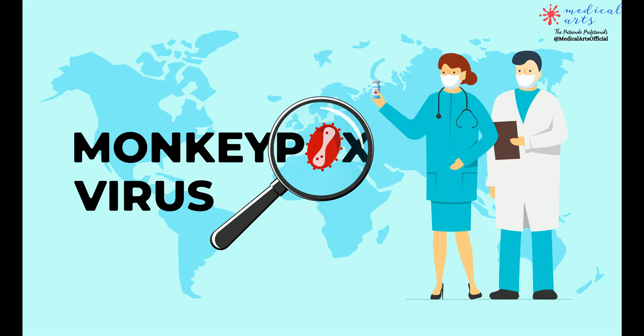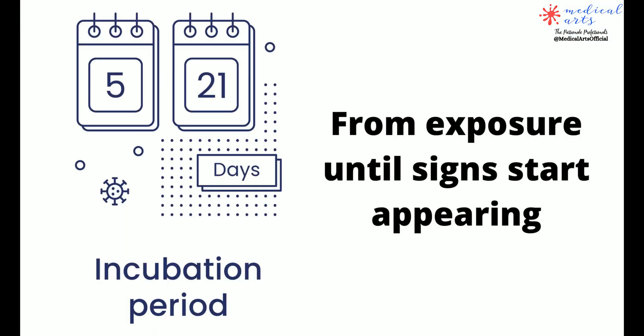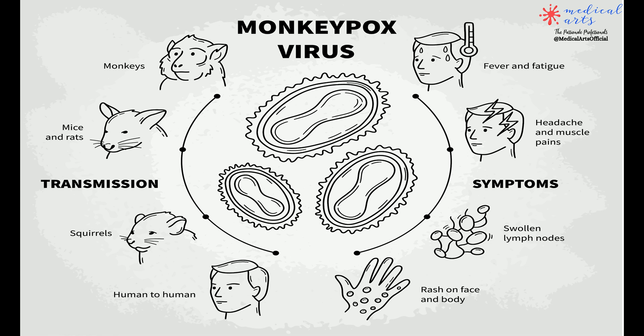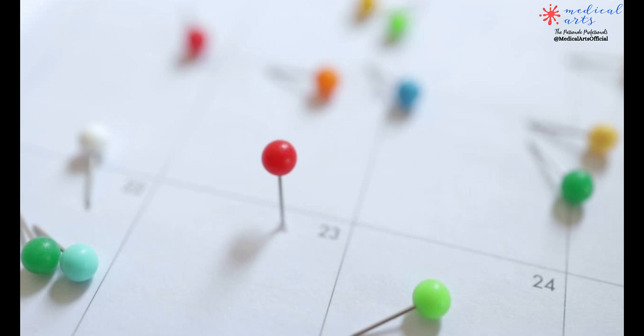It can take 5–21 days after contact with an infection to start having signs and symptoms of monkeypox disease. Most cases show signs within 7–14 days after initial exposure to the virus.